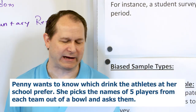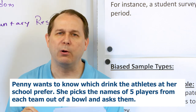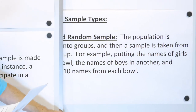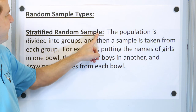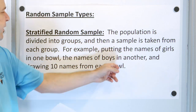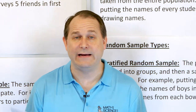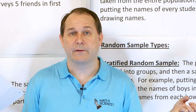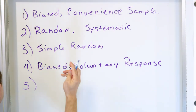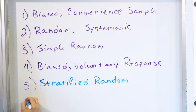Problem five: Penny wants to know which electrolyte drink the athletes at her school prefer. She picks the names of five players from each team out of a bowl and asks them. This is a random sample — she's pulling names out of a bowl. This is a stratified random sample because she's dividing the population into groups — different teams — and drawing from those groups. Putting one team's names in one bowl, another team in another bowl, and drawing five names from each is stratified random sampling.